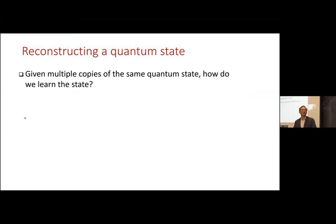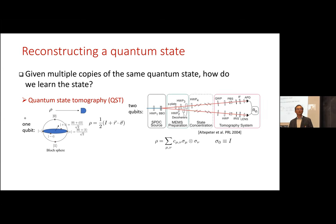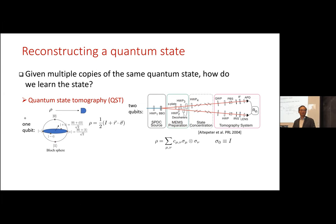The motivation is: if you're given a quantum state — and you need multiple copies because a single copy gives very little information — how do we learn the state? The naive way is to do quantum state tomography. For one qubit, you only need the expectation of the three Pauli matrices to reconstruct the state. For two qubits, you need coincidence measurements. The density matrix is expanded in terms of products of two Pauli matrices, and you sum over all possibilities. If you know the expectation values of these matrices, you can determine the state.